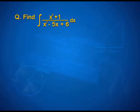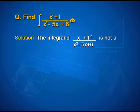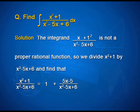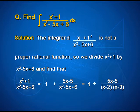Let us solve one more example. Find integral (x²+1)/(x²-5x+6) dx. Here the integrand is not a proper rational function, so we divide x²+1 by x²-5x+6 and find that (x²+1)/(x²-5x+6) = 1 + (5x-5)/(x²-5x+6), which equals 1 + (5x-5)/((x-2)(x-3)).